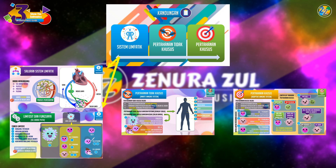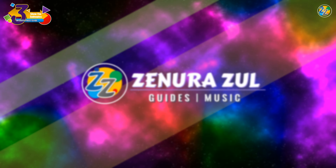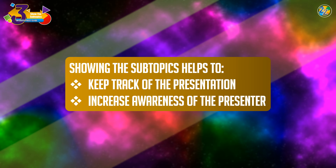As you can see, I label the slides according to their respective subtopics. For the first part, which is System Lymphatic, at the top right corner of the slides you can see the text in the same color as in the contents. What this does is it helps your audience keep track of the whole presentation. It also increases the awareness of the presenter — knowing which part they are presenting at a specific time — so they won't be saying the wrong things.